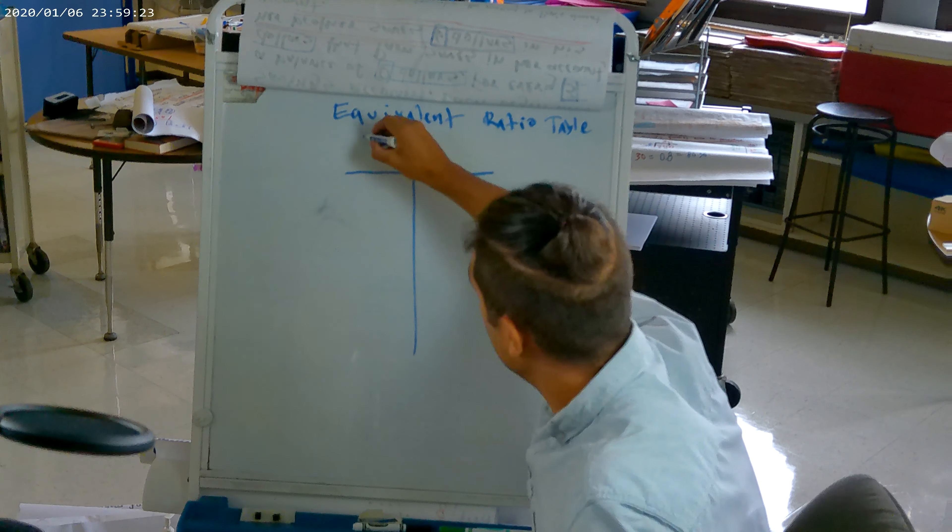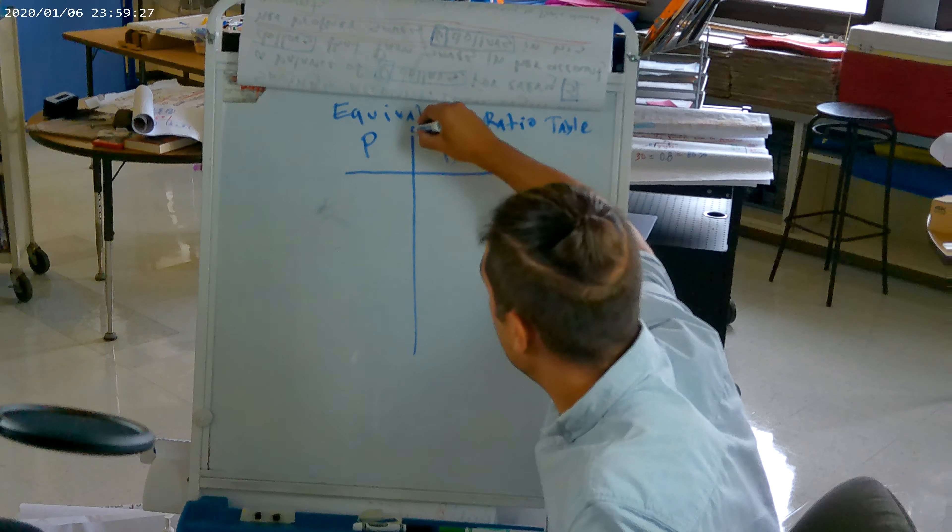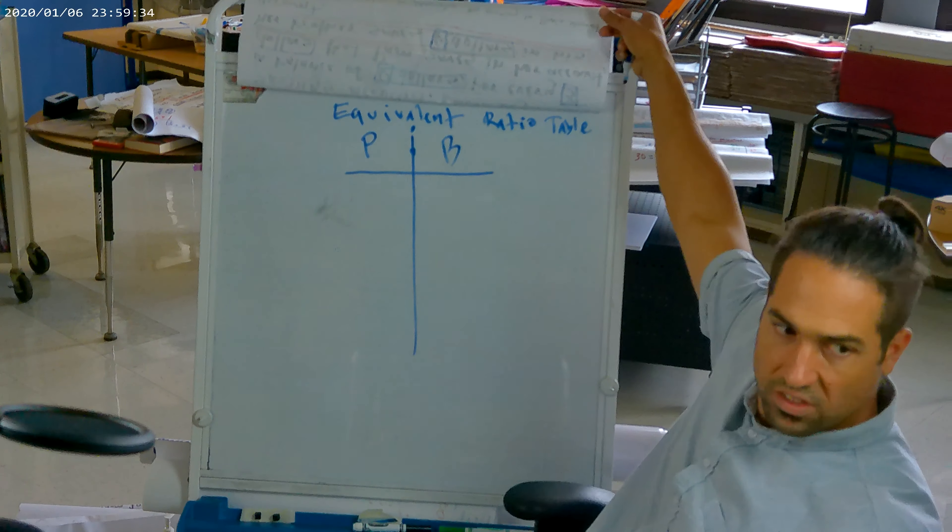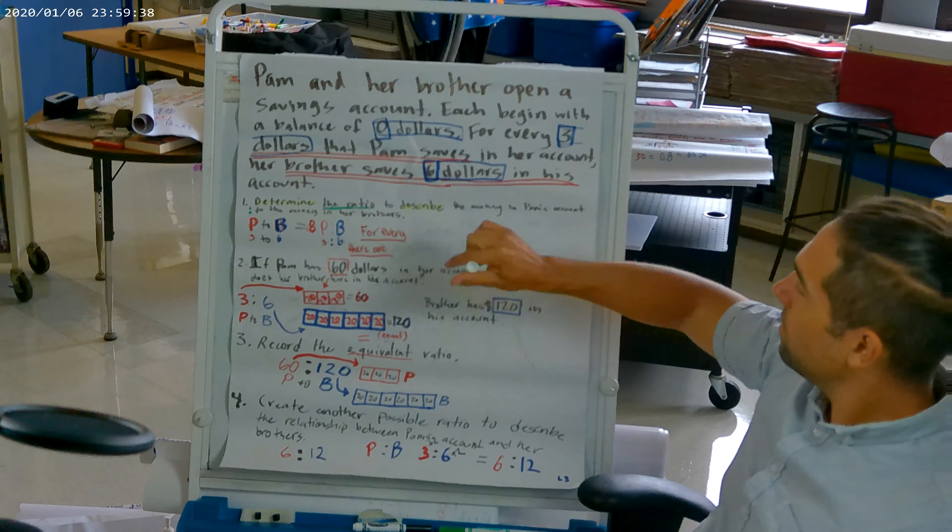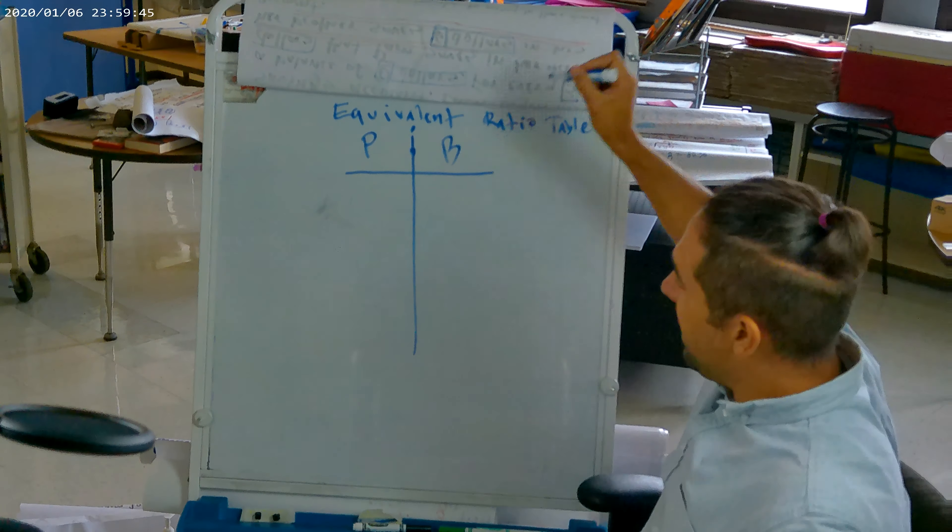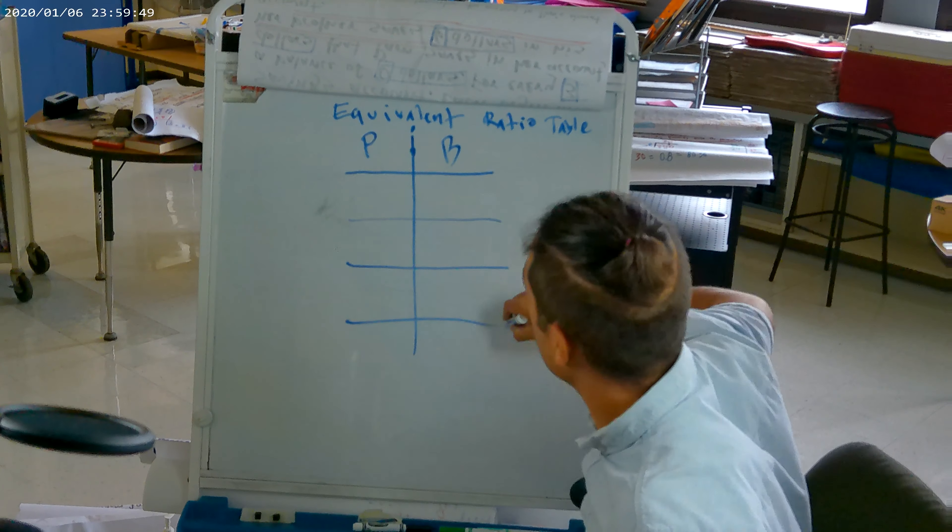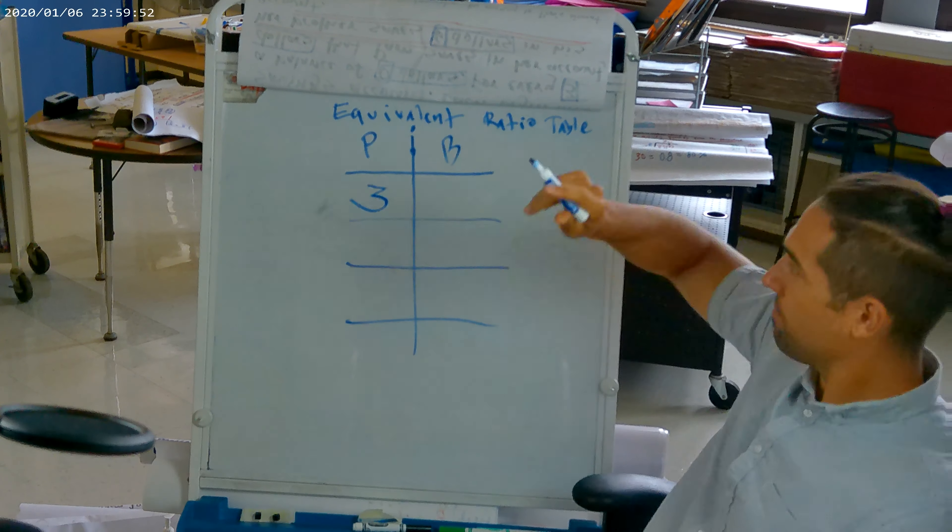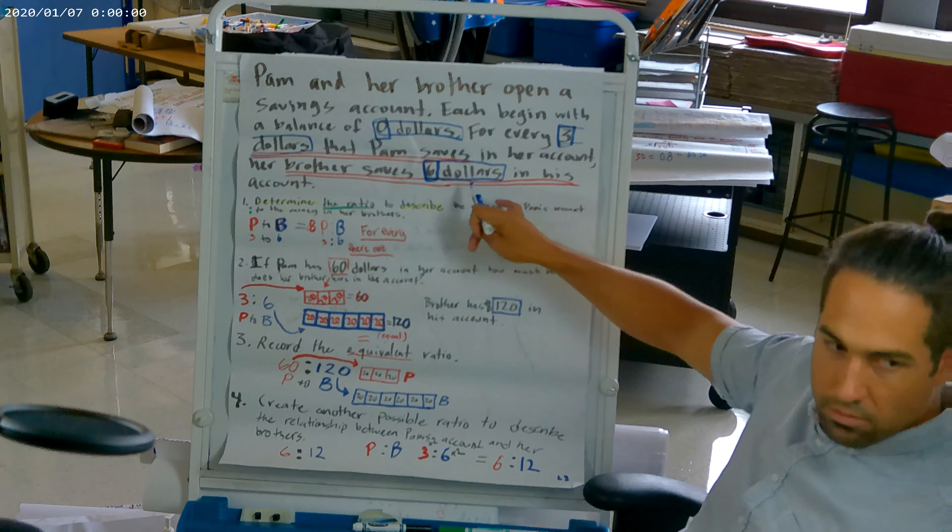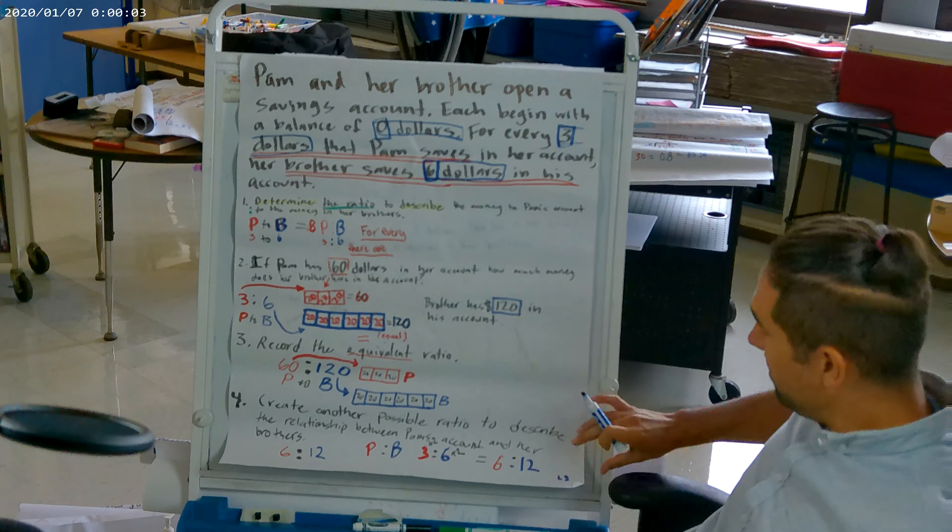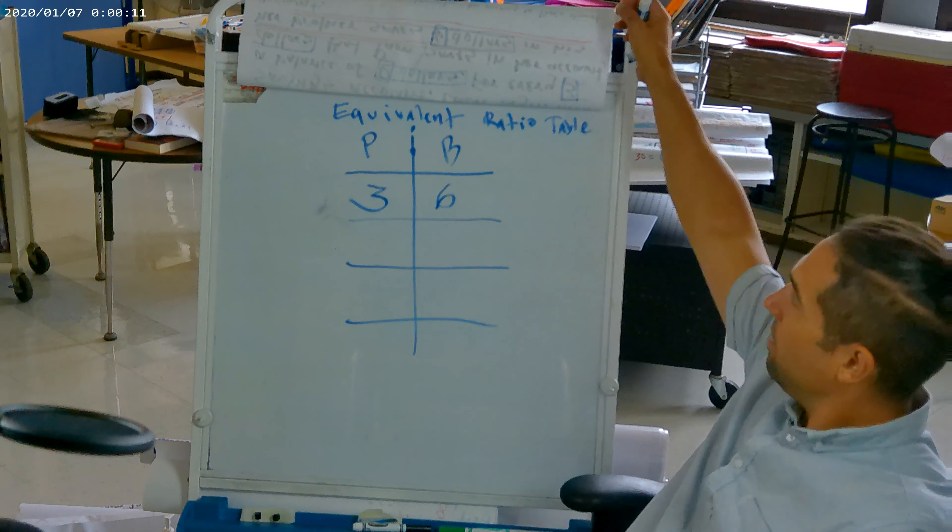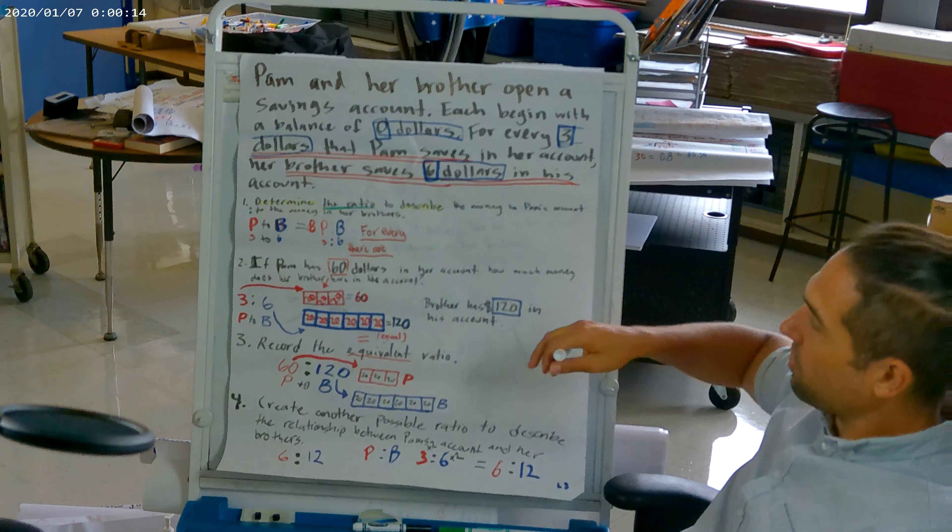And we talked about this before. We have Pam here and her brother here. We read $3 Pam saves. So we know that on the Pam side of things, I'm just going to make sure there's multiple spaces here. On the Pam side of things, we got three.